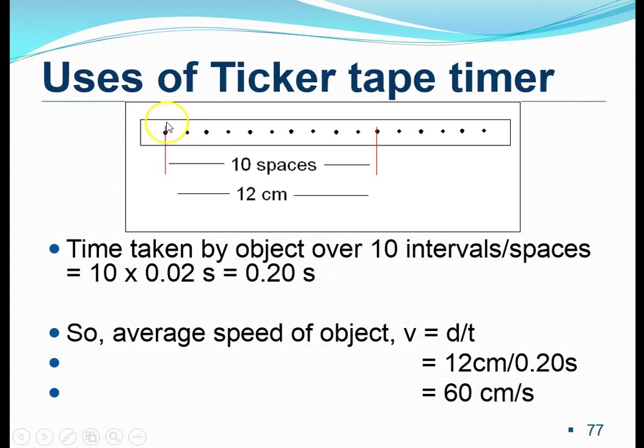Well, always recall that the time taken for one dot to be made is 0.02 seconds, if the ticker tape timer is operating at 50 hertz. And therefore, since there are 10 spaces, we simply take 10 and multiply that by 0.02 seconds, and that will give us a time of 0.20 seconds.